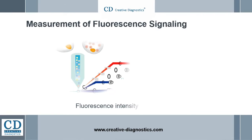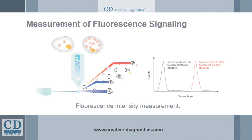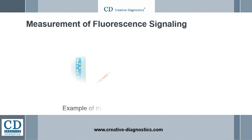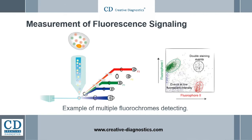Negative results are shown as no or low fluorescent intensity, and positive results have a large number of events at high fluorescence intensity. Cells are divided into four subpopulations: negative, single staining, and double staining events.